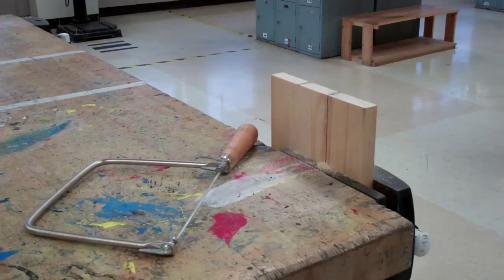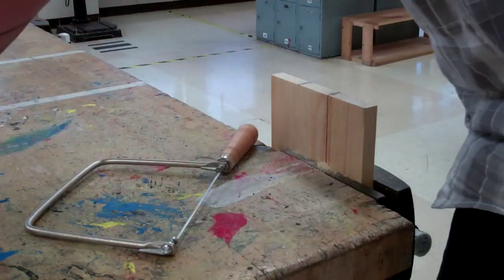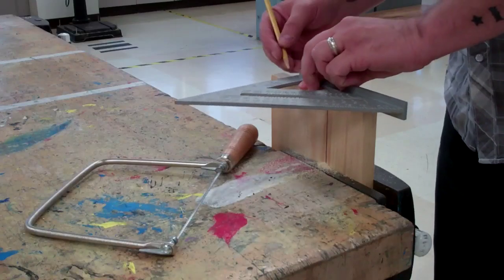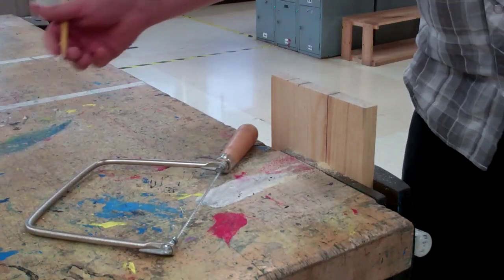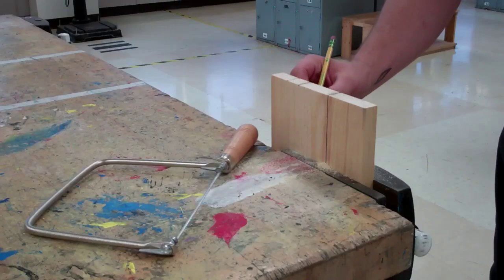To cut curvy or wavy lines, we use the same steps. I will take my speed square, give myself a guideline across the top, and also draw my curve on the face of the board.